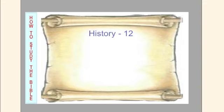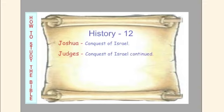The second division would be History, twelve books. Joshua records the conquest of Israel. When Moses died, Joshua became their leader, and when they crossed over, he led them into the conquest of Israel. The book of Judges is the conquest of Israel continued, and records the judges that were used to carry this out.